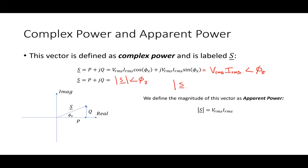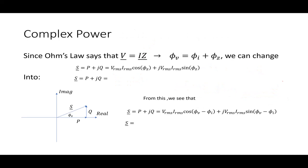The magnitude of S has to be V RMS times I RMS. We give that a name — we define it as the apparent power. So we've now defined four new terms: a real or active power, a reactive power, a complex power, and an apparent power.